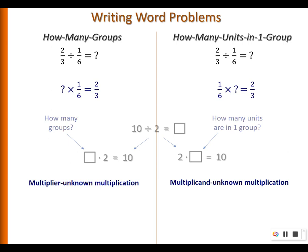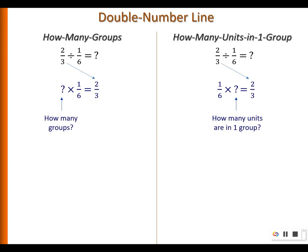Coming back to our more challenging problem of division involving fractions, we again view it in terms of multiplication — as a missing multiplier or missing multiplicand. One key point: the dividend, two-thirds, is always the product when viewed in terms of multiplication. For 'how many groups,' we find the missing multiplier; for 'how many in each group,' we find the missing multiplicand.